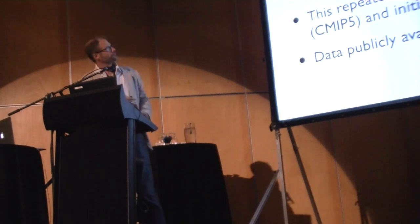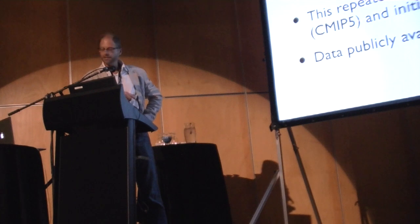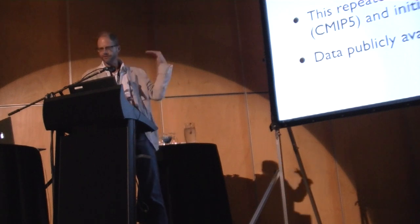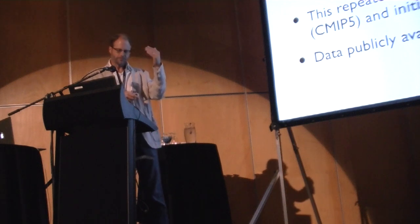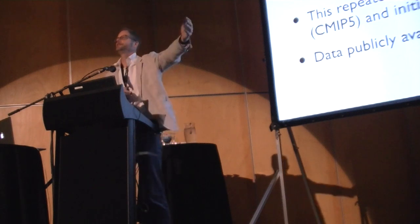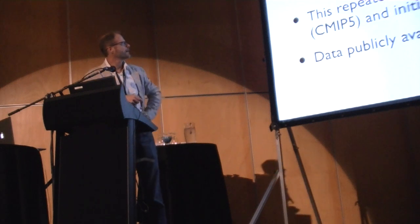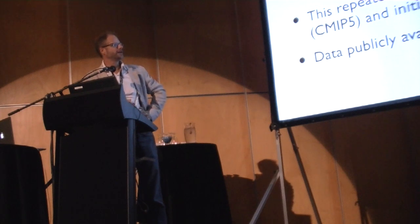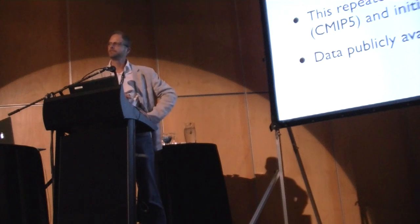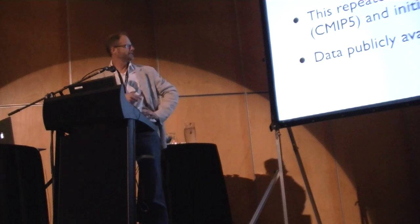Can these climate models predict five-year changes? There is a particular experiment in the Coupled Model Intercomparison Project version 5 where you stop the model, initialize it with observations, run it for ten years, then go back to the previous simulation, stop it five years later, initialize it, and run it for ten years again — done at ten different times to give an ensemble of multi-year forecasts that you can test. This is from a review paper by Jerry Meehl in the American Meteorological Society bulletin, looking at these runs archived by the U.S. Department of Energy at Lawrence Livermore Laboratory.